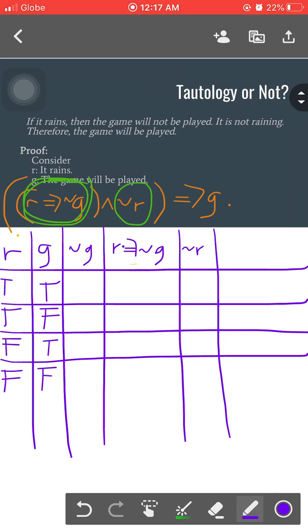We may indicate this one right here, the hypothesis, to be letter h. Just write in hypothesis, so that's r implies not g and not r.